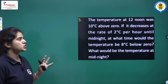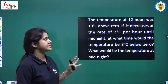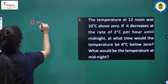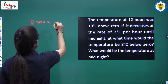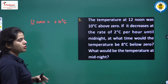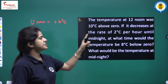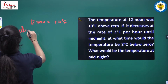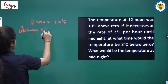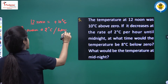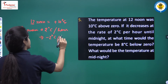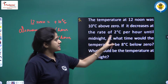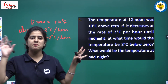The temperature at 12 noon was 10 degrees Celsius above zero, which means plus 10 degrees Celsius. It decreases at the rate of 2 degrees Celsius per hour, meaning minus 2 degrees Celsius per hour, and this continues until midnight.